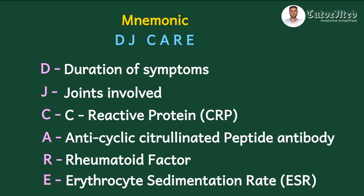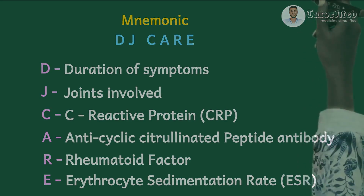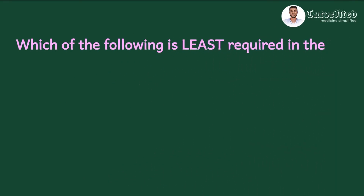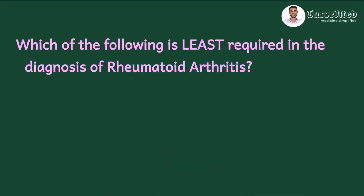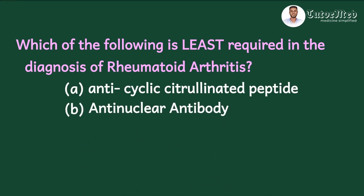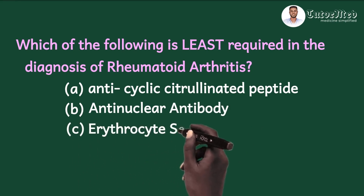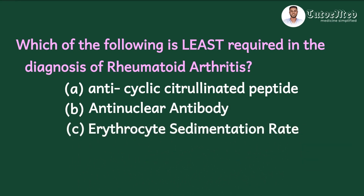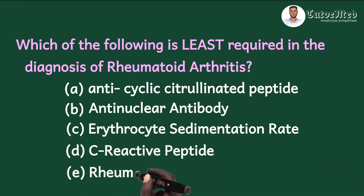Having this in mind, let's revisit our question to look at the answer. By now I know you know the answer. The question said: which of the following is least required in the diagnosis of rheumatoid arthritis? The options were: A — anti-cyclic citrullinated peptide, B — anti-nuclear antibody, C — erythrocyte sedimentation rate, D — C-reactive protein, E — rheumatoid factor.